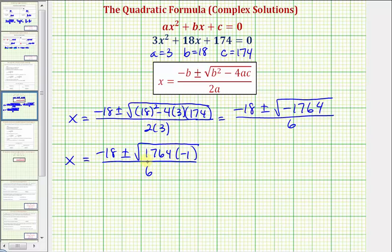Let's check and see if 1764 is a perfect square. If it is, the square root will simplify perfectly.